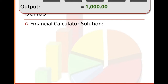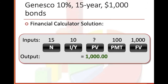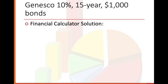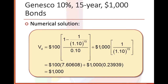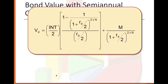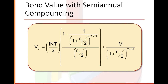On a calculator, we input N = 15, interest per year = 10, payment = $100, future value = $1,000. Our output will be $1,000, which matches what we calculated. For bond value with semi-annual compounding, we divide by two — so the interest rate is divided by two, and N becomes two times N, because we're doing it twice per year in six-month increments.